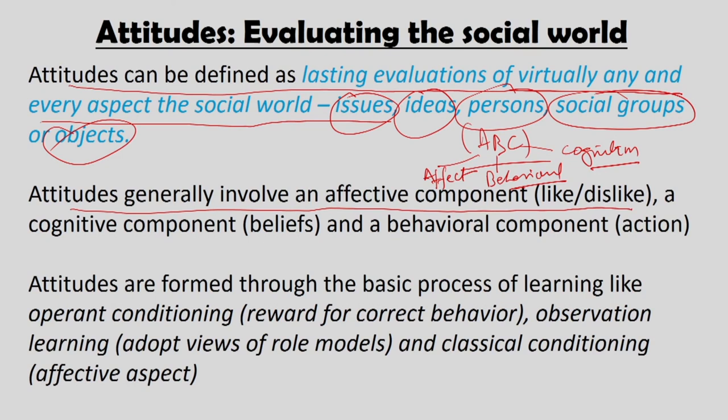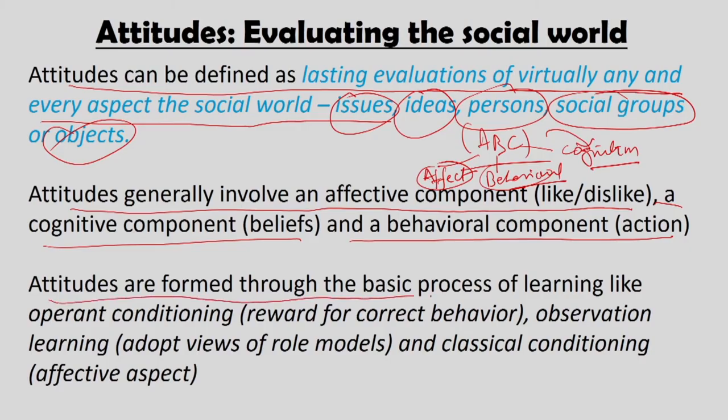Attitudes are relatively lasting evaluations because attitudes can be changed. They involve an affective component — like or dislike; a cognitive component — the belief, idea, and knowledge that you have; and a behavioral component — the action you are going to take. Attitudes define social cognition because your attitude about something defines how you process certain information. If you like a person, all information from him is processed differently. Attitudes are formed through basic processes of learning like operant conditioning, observational learning, and classical conditioning.